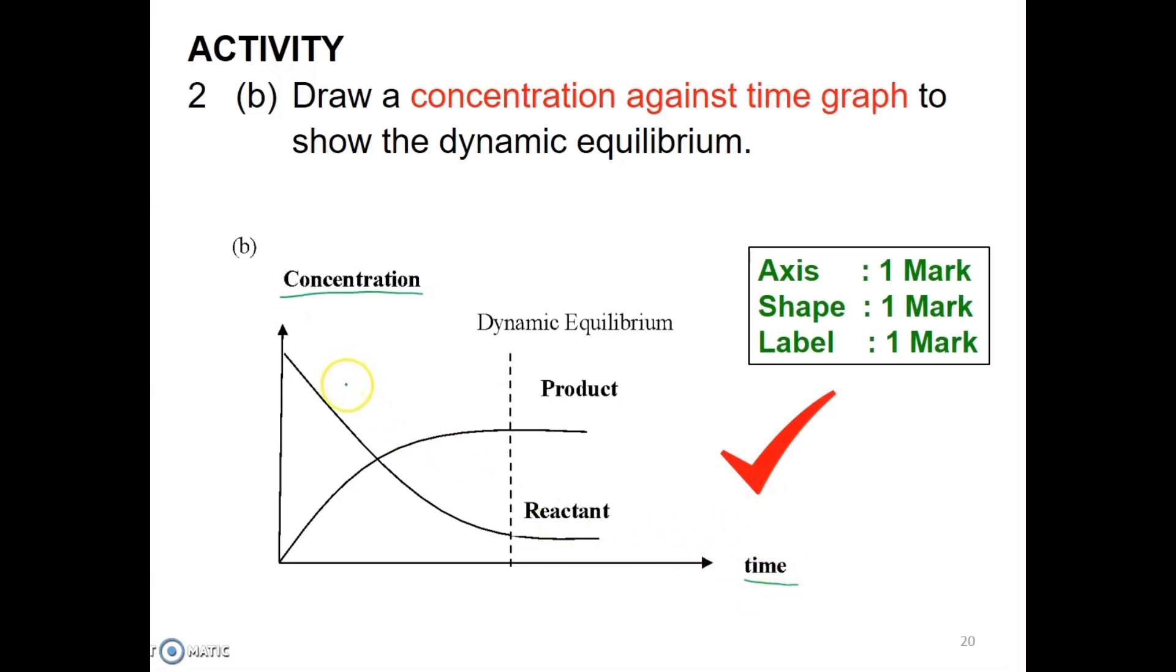The shape of the graph will give you one mark. The correct shape means that the concentrations of reactant must decrease over time, and the concentration of product must start from zero initially and must increase over time.